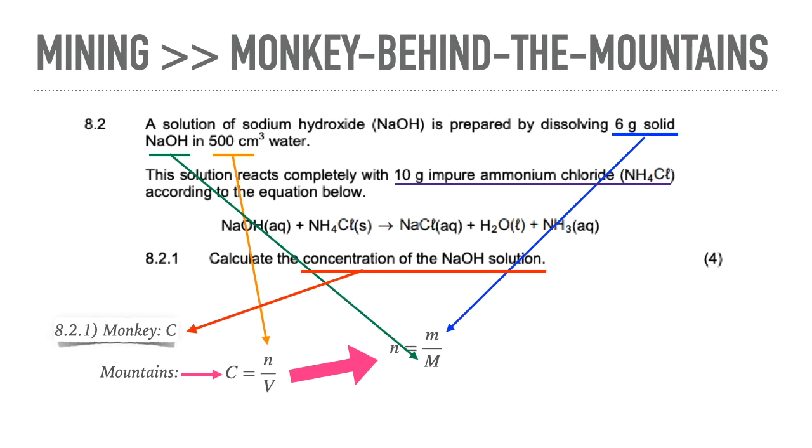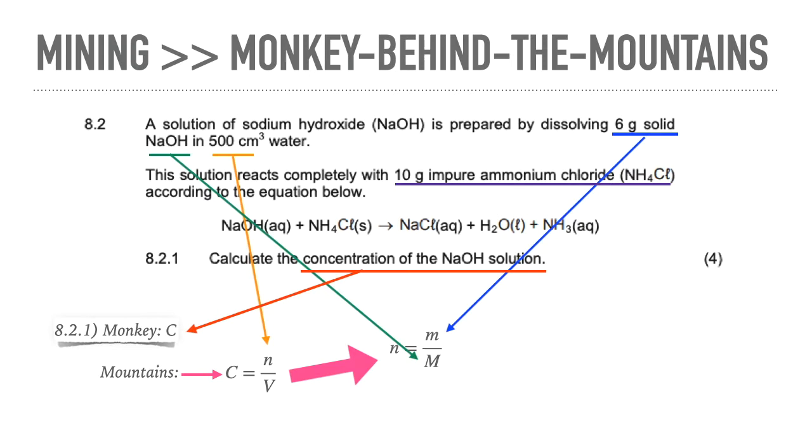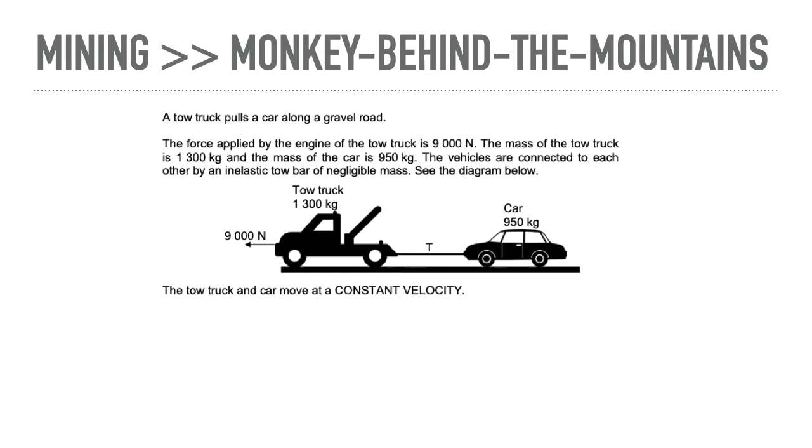For our second question, going over from mining to monkey behind the mountains, we are first of all going to have a look at a tow truck that pulls a car along a gravel road. Now the force applied by the engine of the tow truck is 9000 newtons. The mass of the tow truck is 1300 kilograms and the mass of the car is 950 kilograms. The vehicles are connected to each other by an inelastic tow bar of negligible mass. See the diagram below. The tow truck and car move at a constant velocity. Before we go over to the question, let's just mine in to kind of go what information has been given to us. So we start off by looking at the tow truck, it's pulled forward by 9000 newtons, the mass of the tow truck is 1300 kilograms and the mass of the car is 950 kilograms. Now this is going to be quite important because we're going to use it in our formulas.